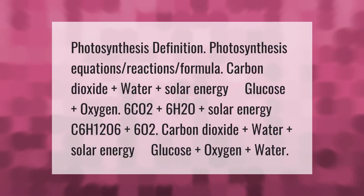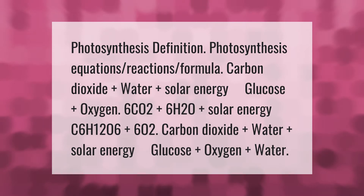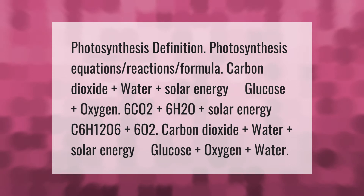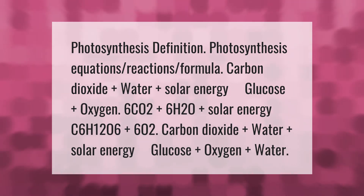Photosynthesis equation: carbon dioxide plus water plus solar energy → glucose plus oxygen. The formula is: 6CO₂ + 6H₂O + solar energy → C₆H₁₂O₆ + 6O₂. In summary: carbon dioxide plus water plus solar energy → glucose plus oxygen plus water.